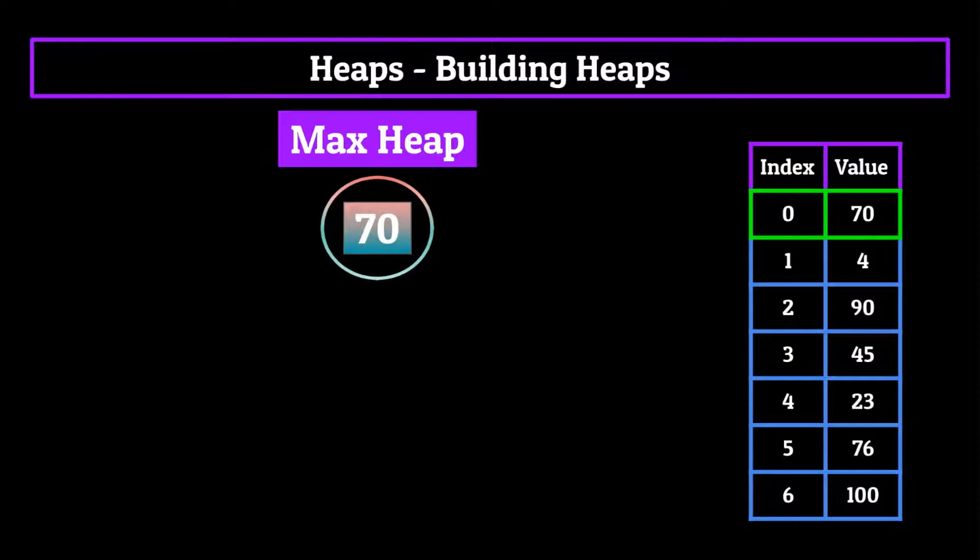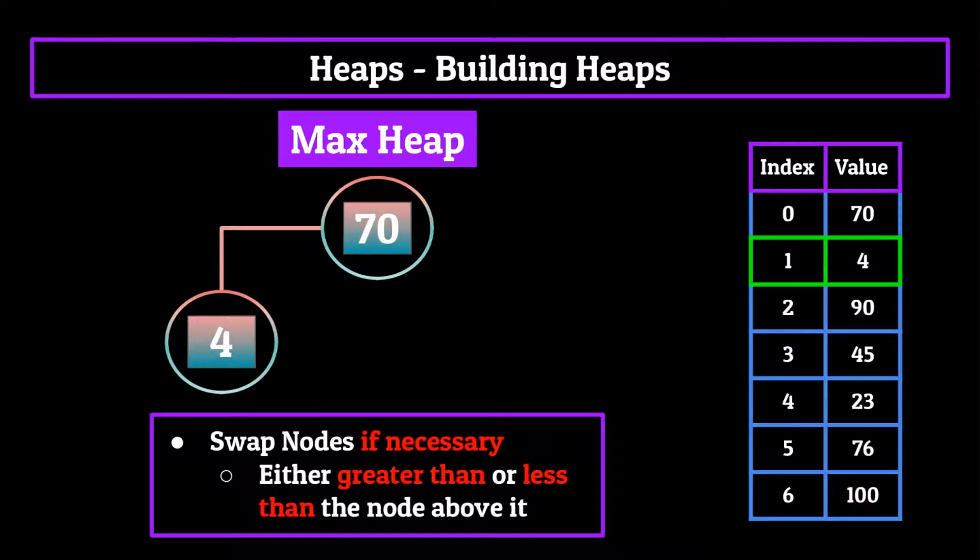Then we add another node at the bottom of the heap at the leftmost position available. So we would first insert a node at the bottom of the heap to the left. For our heap, this means adding the integer four as a child of the 70 node. The final step is to recursively go up the heap and swap nodes if necessary. Now when we say if necessary, we mean that if the node we just added is more extreme, either greater than or less than the node above it, depending on the type of heap that we've created, we need to swap them to maintain order amongst the heap. So since we're building a max heap and 70 is greater than four, no swaps are necessary.